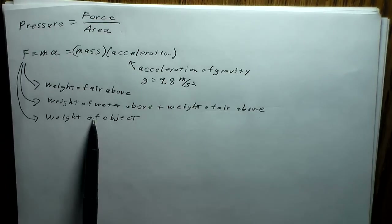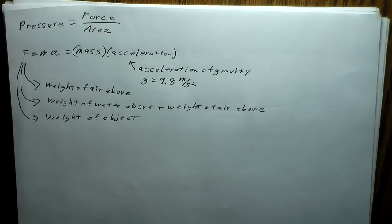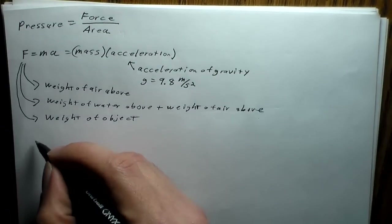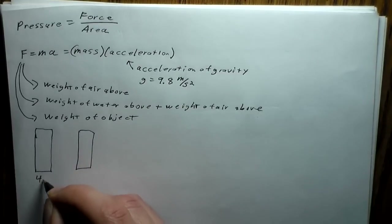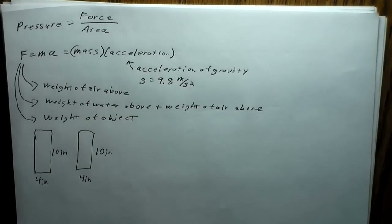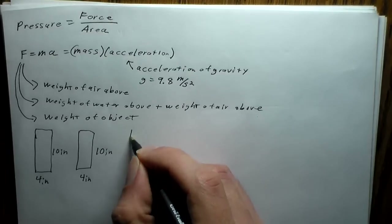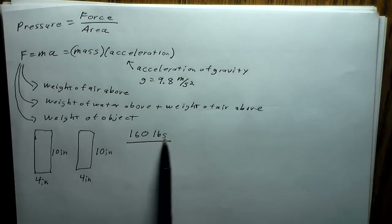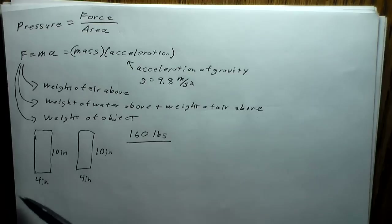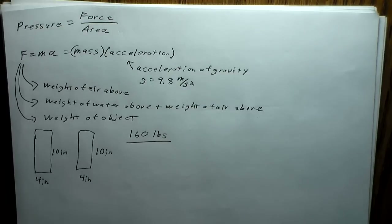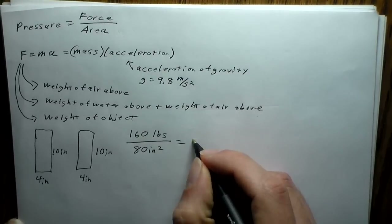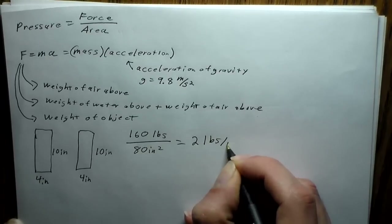Let's demonstrate with a person wearing two shoes, each about 4 inches by 10 inches. Assuming you're flat-footed and weigh 160 pounds, that weight is your force. The total area is 10×4 = 40 square inches per shoe, so 80 square inches total. So the pressure is 160 over 80, which is 2 pounds per square inch.